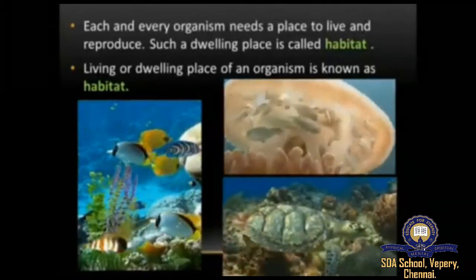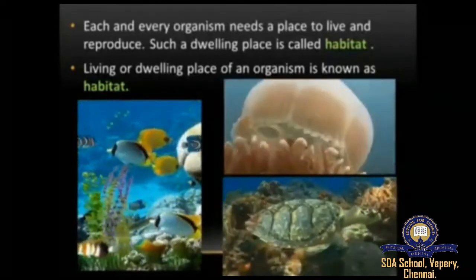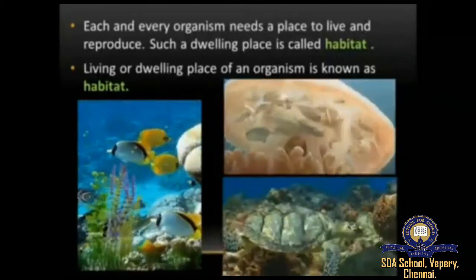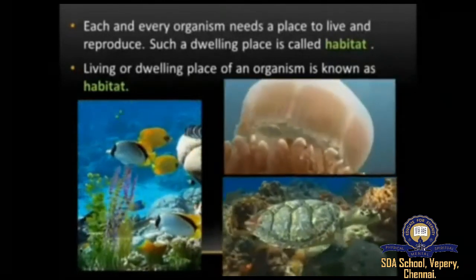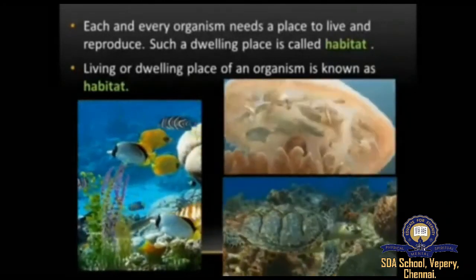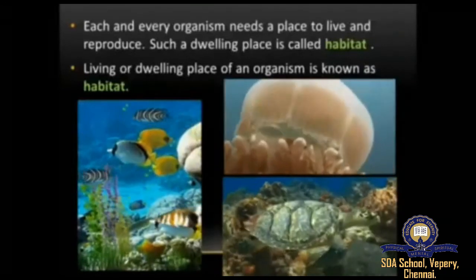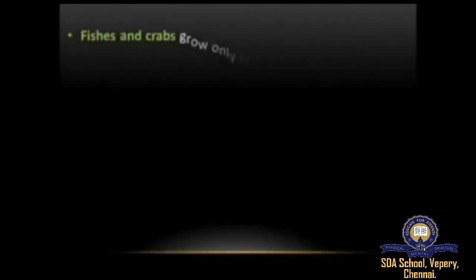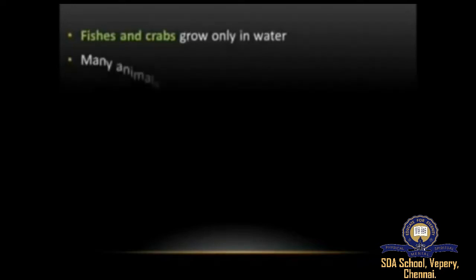Fishes and crabs grow only in water, while many animals like elephants, tigers, and camels live on land.